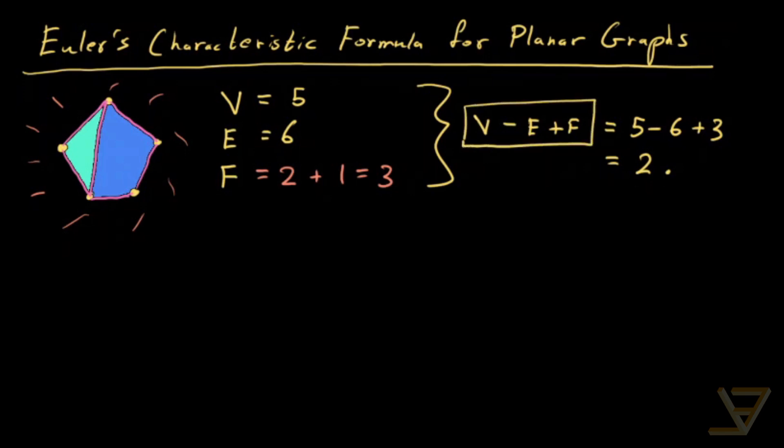And it turns out that for any planar graph that is connected, this computation always yields 2. And that's called the Euler characteristic of planar graphs.